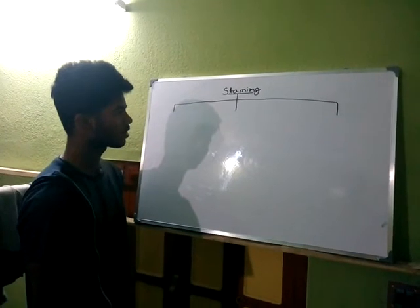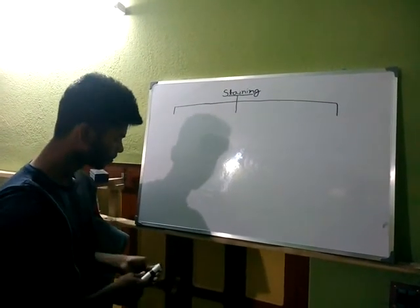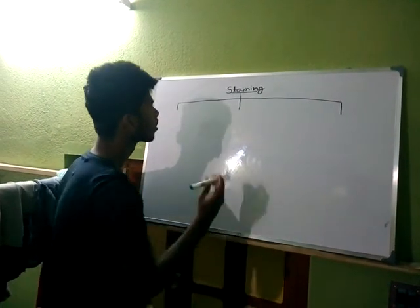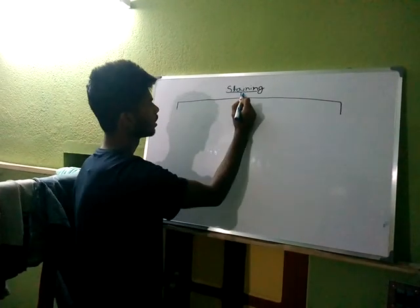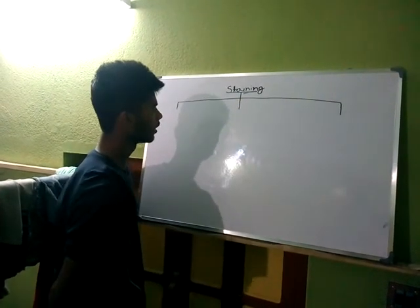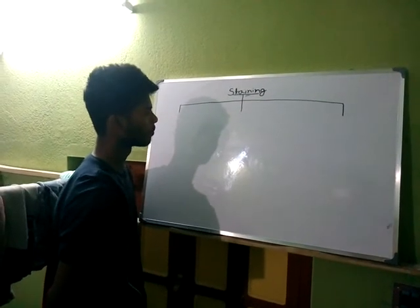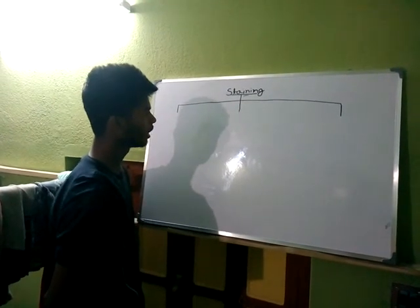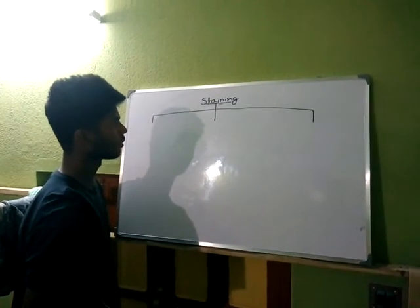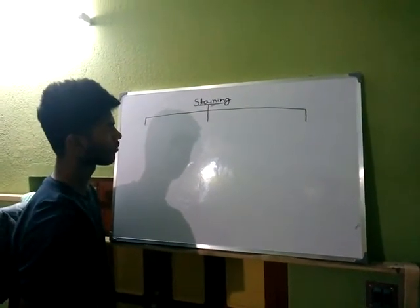At first I tell you about staining. Staining is the technique of coloration process of bacteria film by using any dye or stain for viewing the morphological structure of the bacteria.